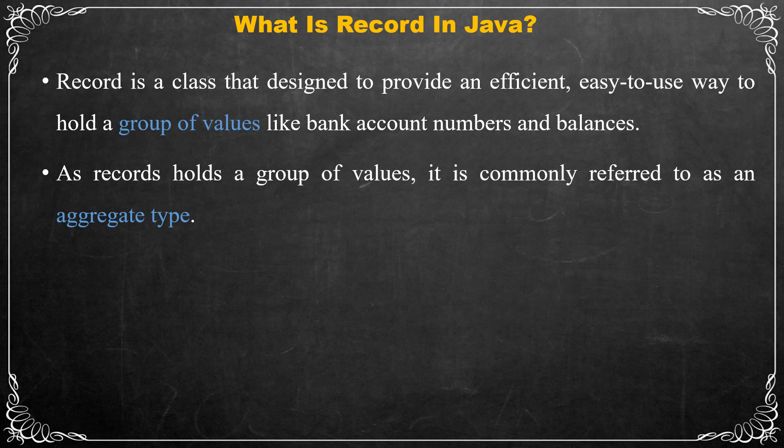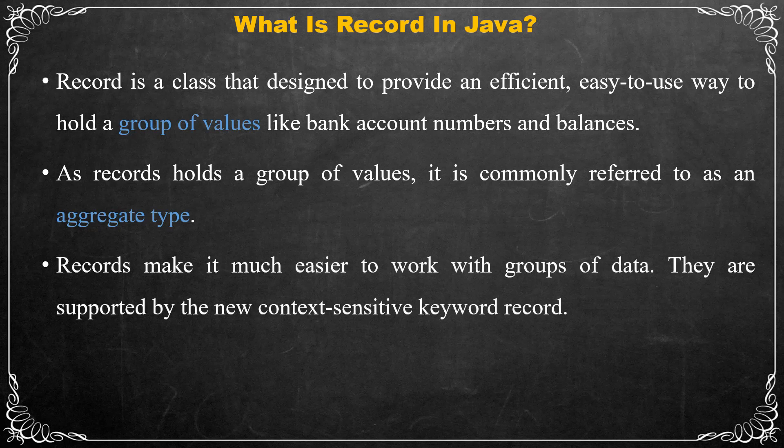Another reason for the addition of records is to enable a program to clearly indicate that the intended purpose of a class is to hold a grouping of data, rather than act as a full-featured class. A record is a narrowly focused, specialized class. It is declared by use of the record context-sensitive keyword, so record is a keyword only in the context of a record declaration.